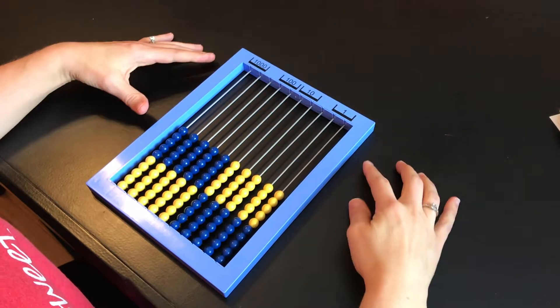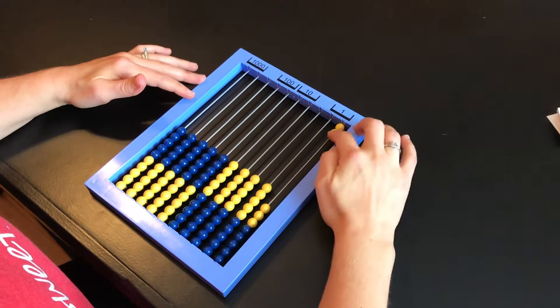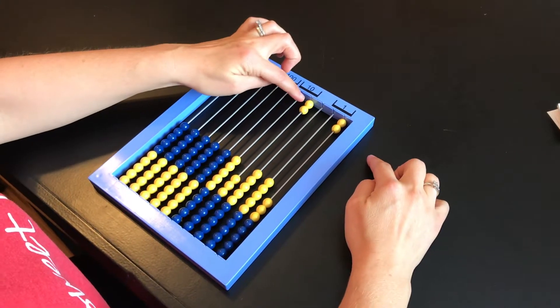The other great thing about an abacus is on the backside, they have it broken down to ones, tens, hundreds, and thousands. And so then your child could easily say two ones, two tens is 10, 20.